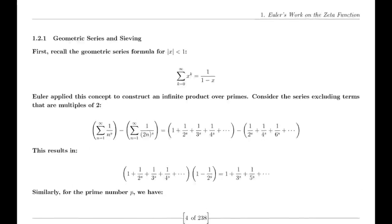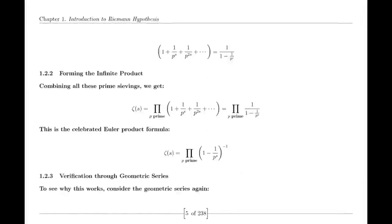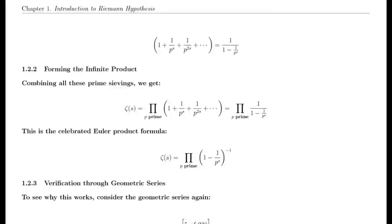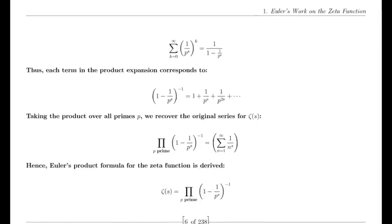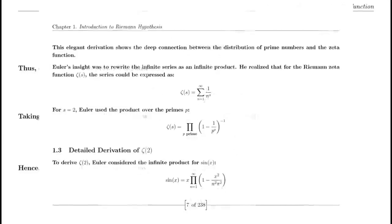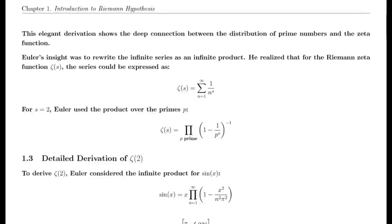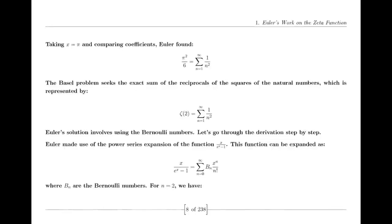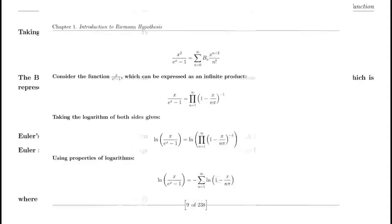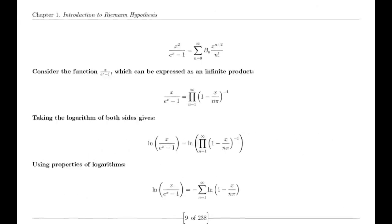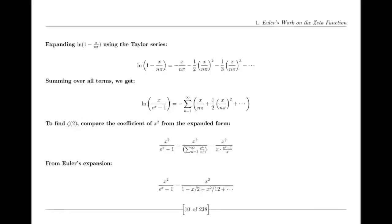Riemann also made use of the Jacobi theta function, which has significant applications in various areas of mathematics. The theta function's series representation and modular properties were instrumental in Riemann's derivation of the functional equation for the zeta function. The functional equation relates the zeta function's values at s and 1-s through a complex expression involving π, the gamma function, and trigonometric functions, showcasing deep symmetry.